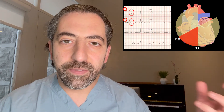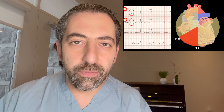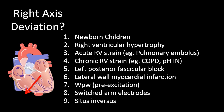Things that cause right axis deviation are either things that reduce the electrical signals on the left side of the heart or increase electrical signals on the right side of the heart — for example, anything that increases the size or strain on the right ventricle. Some of these causes include newborn children where the right ventricle is relatively larger, right ventricular hypertrophy, acute RV strain such as pulmonary embolism, chronic RV strain such as COPD or pulmonary hypertension, left posterior fascicular block, a lateral wall myocardial infarction, pre-excitation with an accessory pathway, switched arm electrodes, and situs inversus.